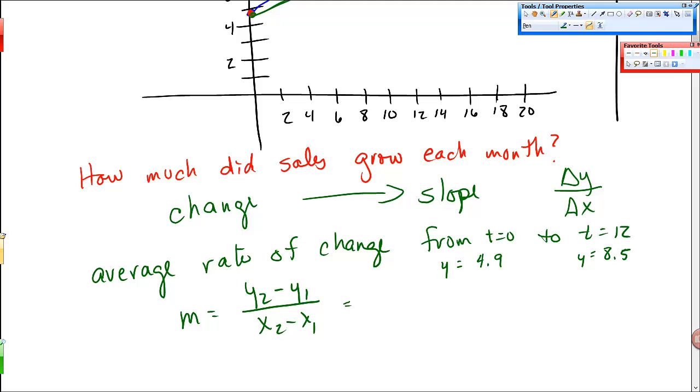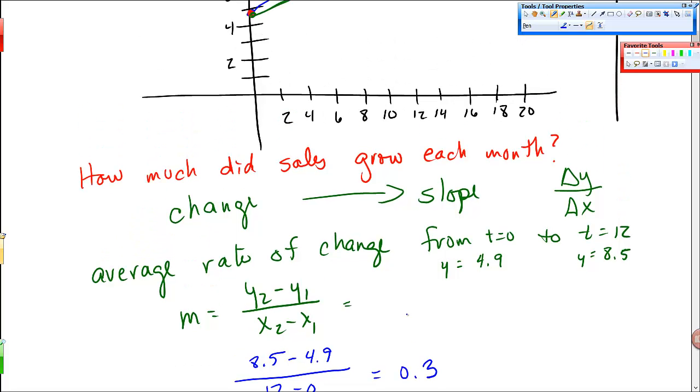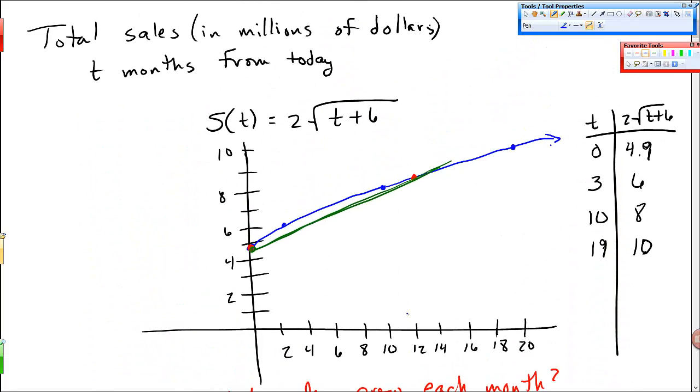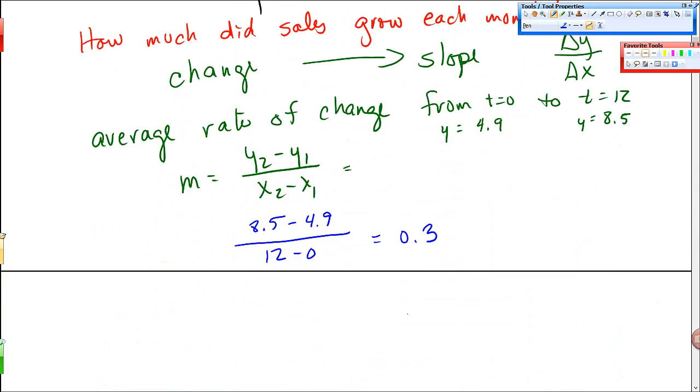And so I come down here, let me go right here. I'm going to go right under this slope instead, and I'm going to put 8.5 minus 4.9, and then I subtract the x values, 12 minus 0. And I get about 0.3. So in the context of this problem, let's go back. This was total sales in millions of dollars.